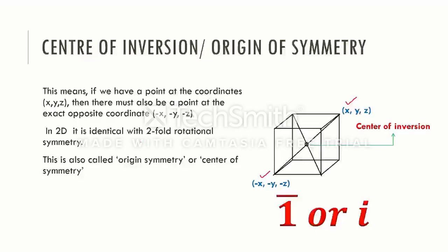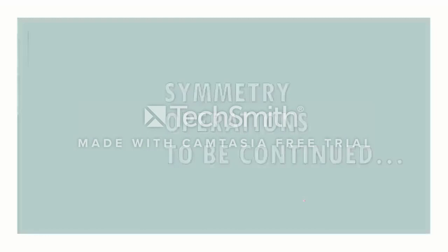Inversion operation is equivalent to mirroring at a point. In two-dimensional objects, the center of inversion is identical with the two-fold rotational axis. The symbol for such a center of inversion is I or 1 bar. In the next video, we will discuss a few more symmetry operations like glide, proto-reflection, proto-inversion, and compound symmetry operations like glide and screw. Thanks for watching. See you soon.